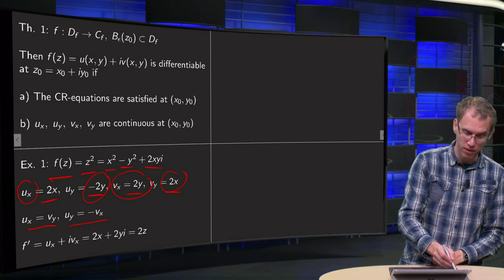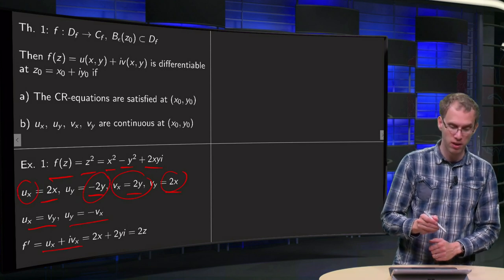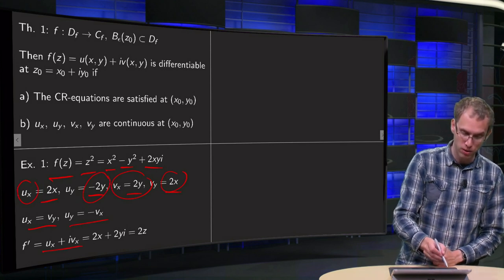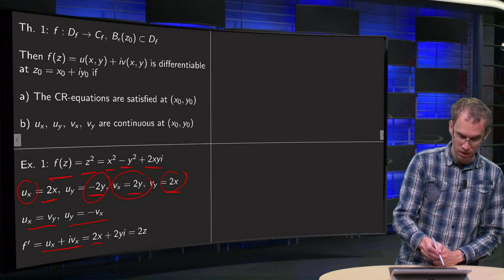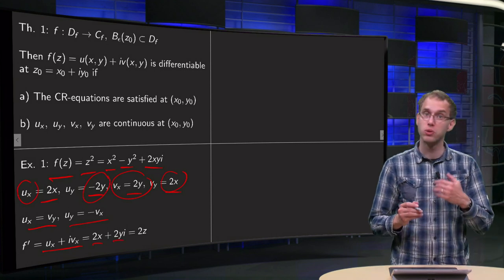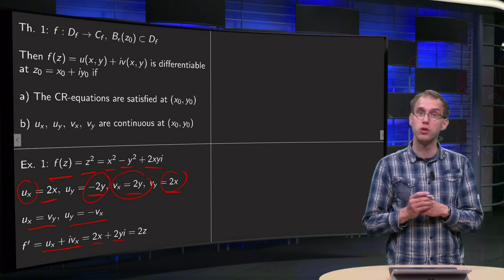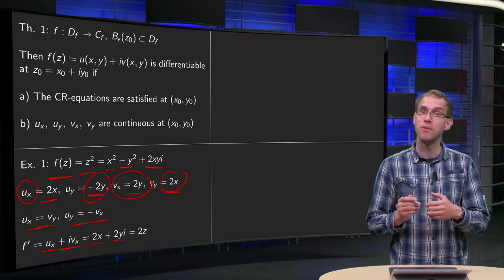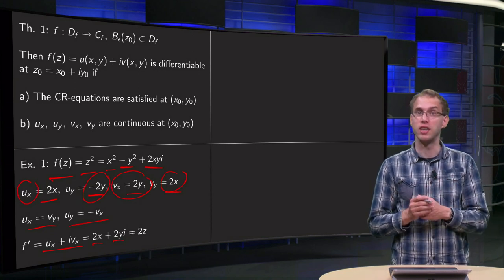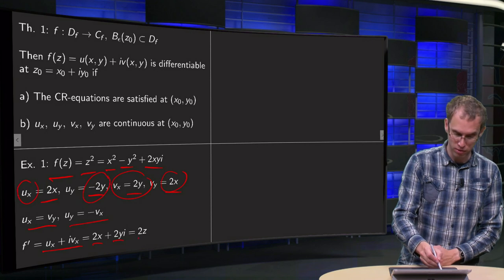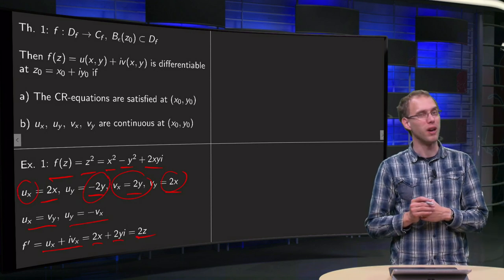So we can write our derivative as ux plus i times vx, which is ux equals 2x, vx equals 2y, so we find 2x plus 2y times i. And if you write again z equals x plus iy, you find f prime equals 2z, which won't surprise you, of course.